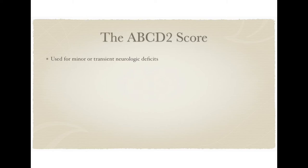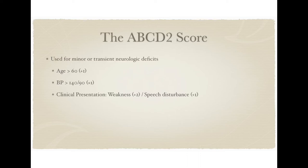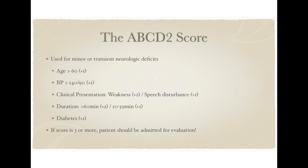A useful score to triage patients, particularly with minor symptoms or transient neurologic deficits, is the ABCD2 score. Patients are given 1 point if their age is greater than 60, another point if their initial blood pressure was greater than 140/90, 2 points if their initial symptom involved unilateral weakness, 1 point if their initial presenting symptom involved a speech disturbance such as dysarthria without weakness, 2 points if the duration of their symptoms was greater than 60 minutes, 1 point if the duration was between 10 and 59 minutes, and another point for patients with diabetes. If the score is 3 or more, the patient meets criteria for inpatient admission for evaluation.